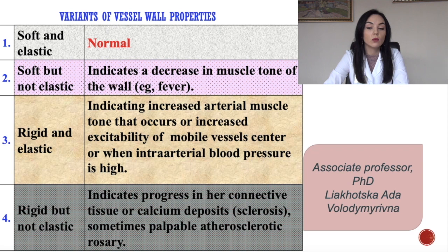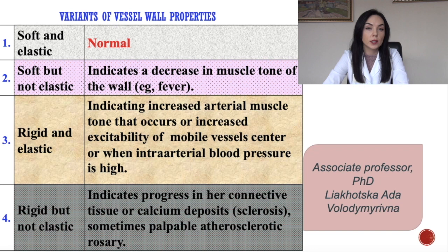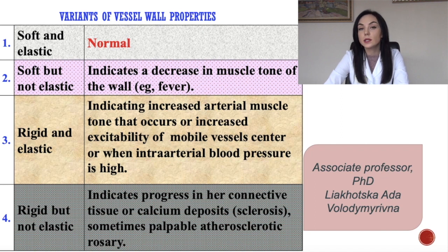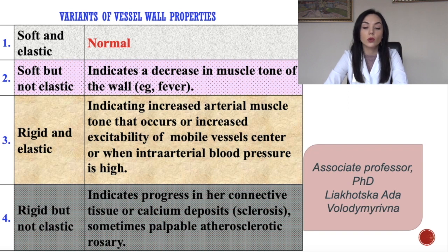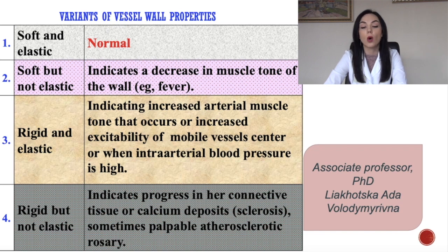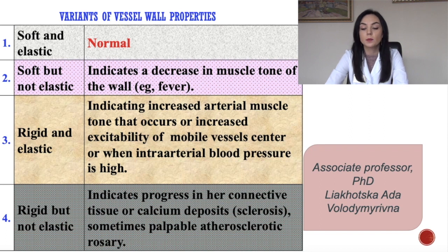Variants of vessel wall properties: in normal case it should be soft and elastic. If it is soft but not elastic, it indicates a decrease in muscle tone of the wall, for example during fever. If rigid and elastic, it indicates increased arterial muscle tone or high intra-arterial blood pressure. If rigid but not elastic, it indicates progressive connective tissue or calcium deposits — sclerosis, sometimes felt as an atherosclerotic rosary.